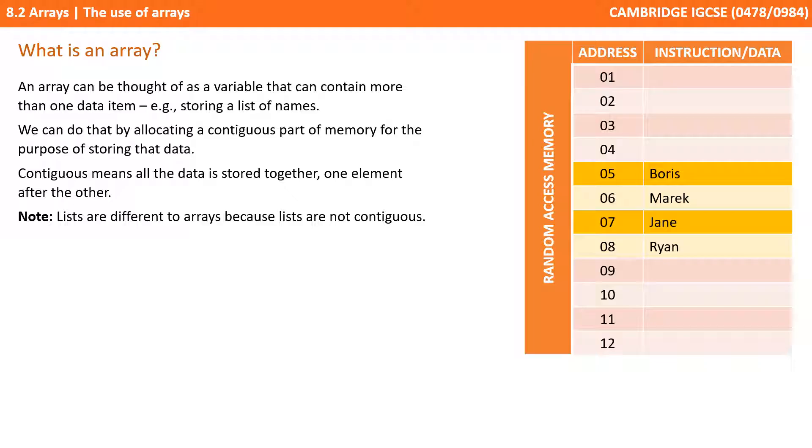Now, you may hear lists being thrown about and indeed Python's version of arrays, close enough in an abstract sense, are lists. Lists are technically different though in a number of ways, which will be on the scope of this course because lists don't have to be contiguous.